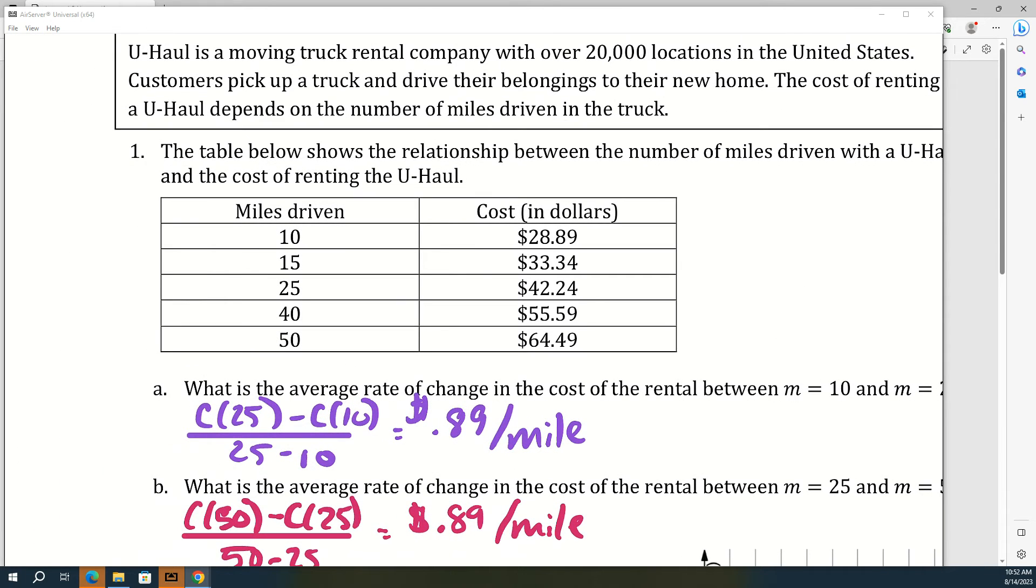And we'll do an example with it in just a second. So on this U-Haul question, the change in miles here is 10. So Δm is 10. Anytime you see that triangle, it means change. And then here it's also 10. And if that is the case, then these two changes should also be the same. So the change in cost here was $8.90. The change in cost here is also $8.90. So that happens with linear functions.